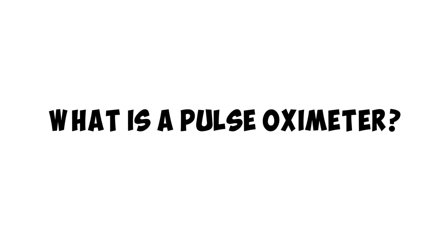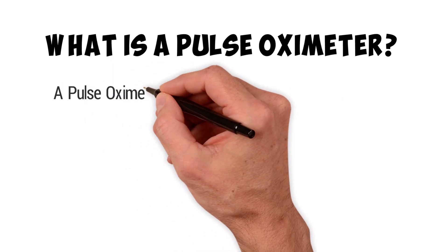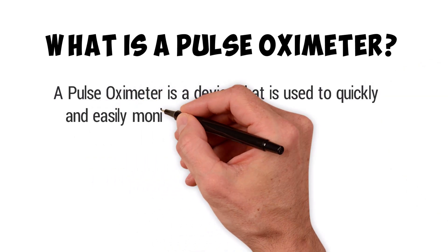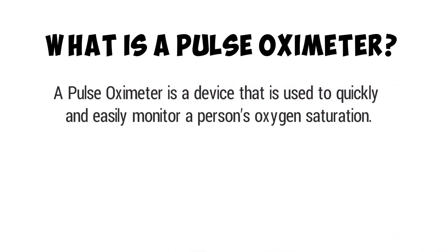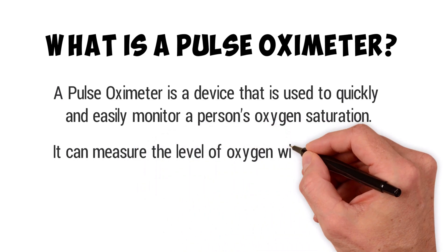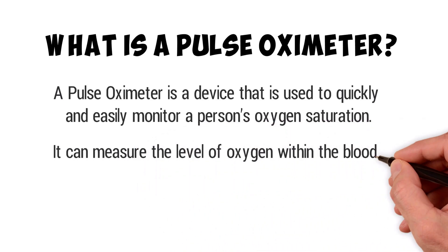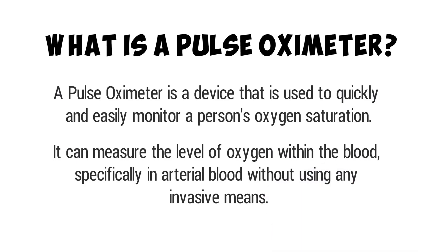Since you're here watching this video, you may be wondering: what exactly is a pulse oximeter? A pulse oximeter is a device that is used to quickly and easily monitor a patient's oxygen saturation. This means it can measure the level of oxygen within the blood — specifically in arterial blood — without using any invasive means.